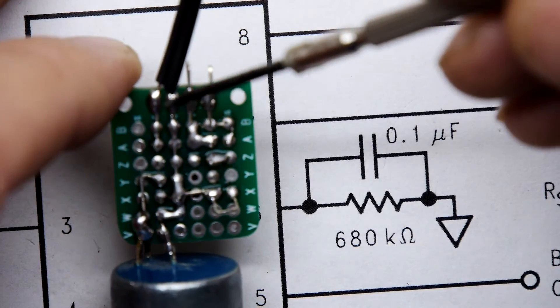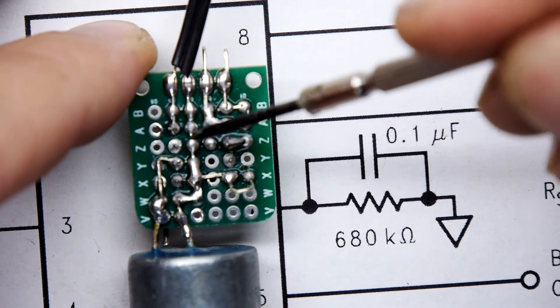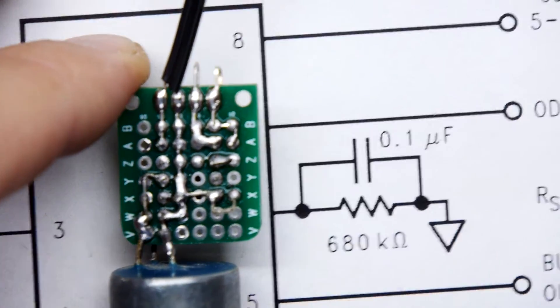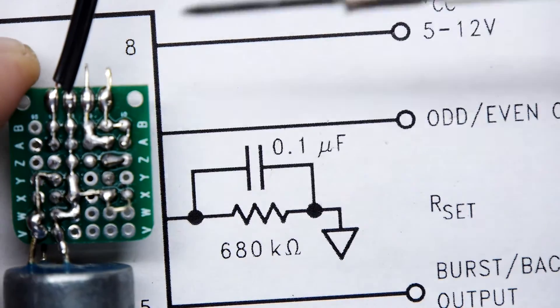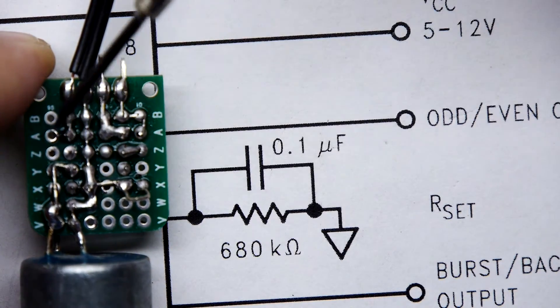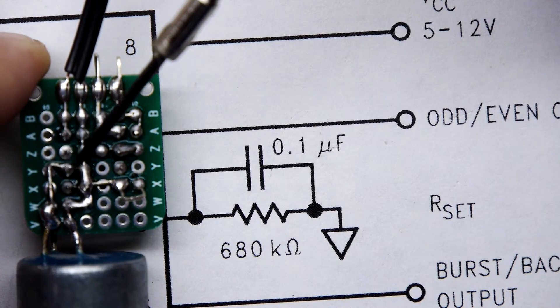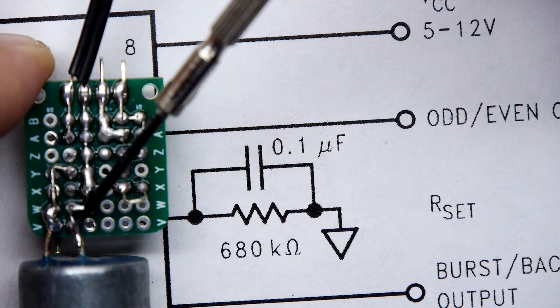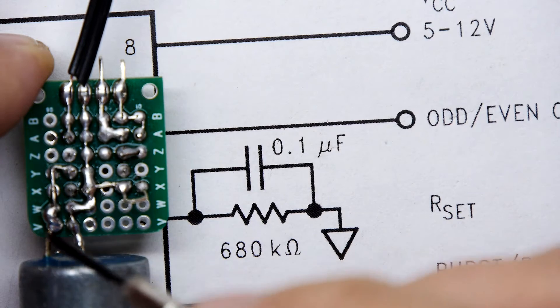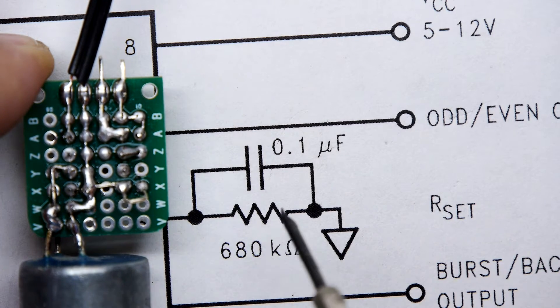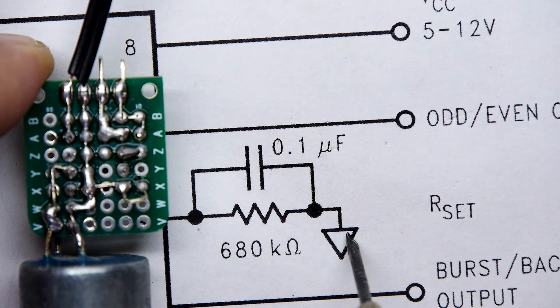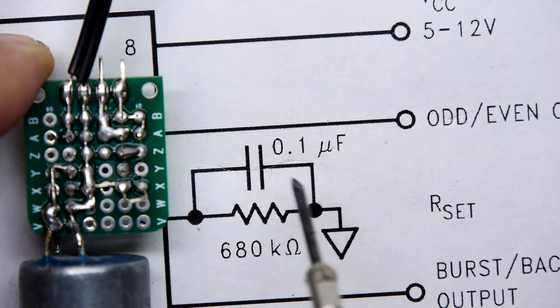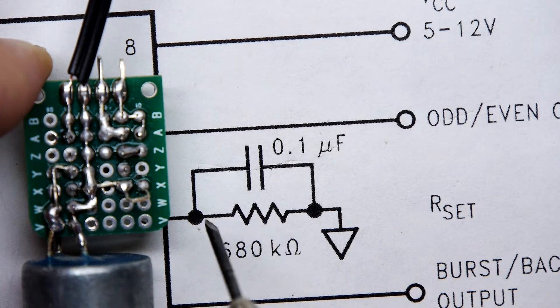We've got pin 8 as we mentioned earlier, then we've got pin 7 which is the odd even output which we're not using at all. Going down to here, this is pin 6 and it's going out to here. We've got a capacitor on the other side of the board between pin 6 and ground. So between pin 6 and ground we've got this capacitor on that side of the board, and on the top of the board we've got this pot.